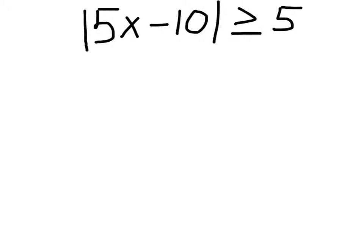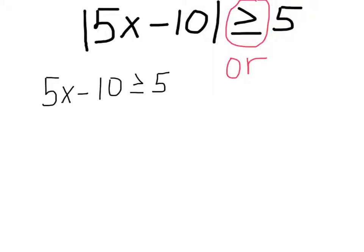Once we get to this point, we are going to solve for two equations. When you see the greater than sign, we are going to associate that with the word OR. We are going to write out our two inequalities. For the first one, we are going to remove the absolute value symbol, and we get 5X minus 10 is greater than or equal to five.